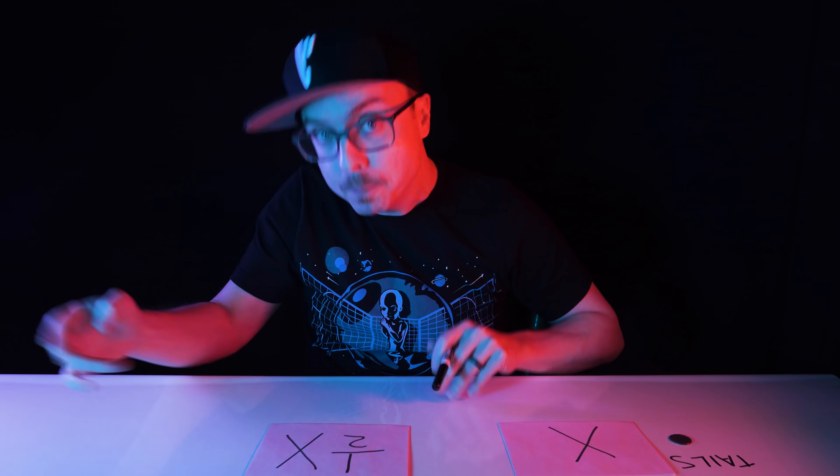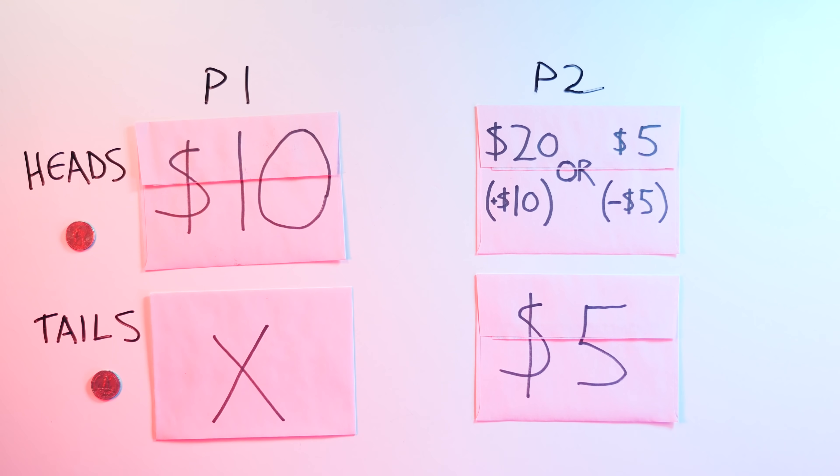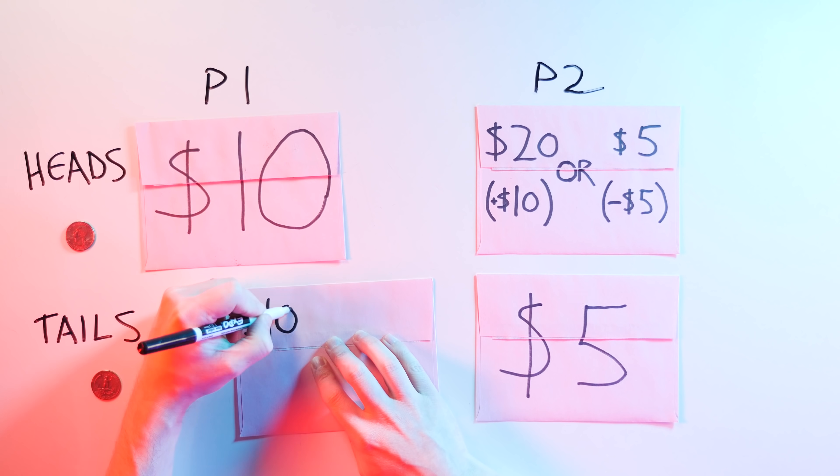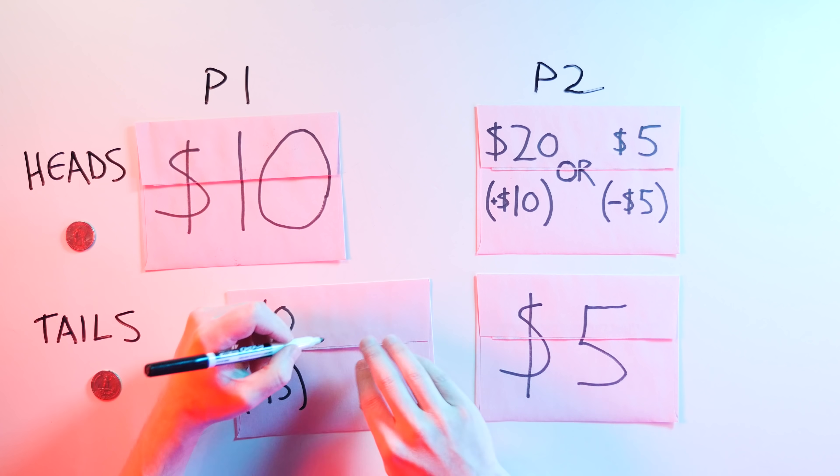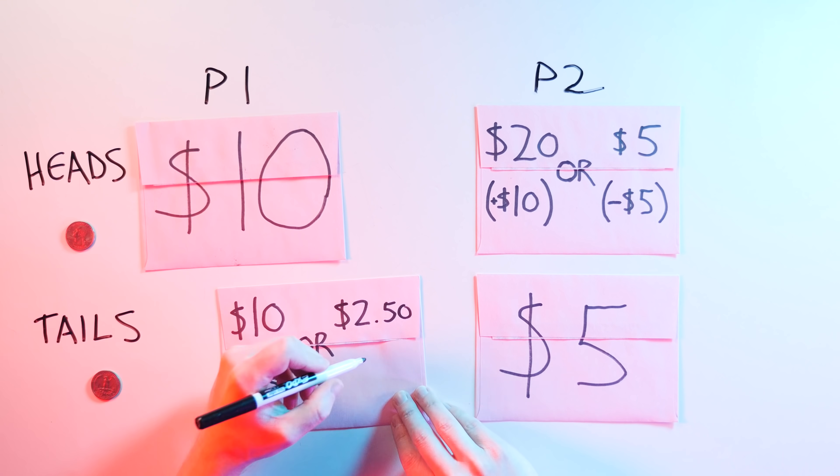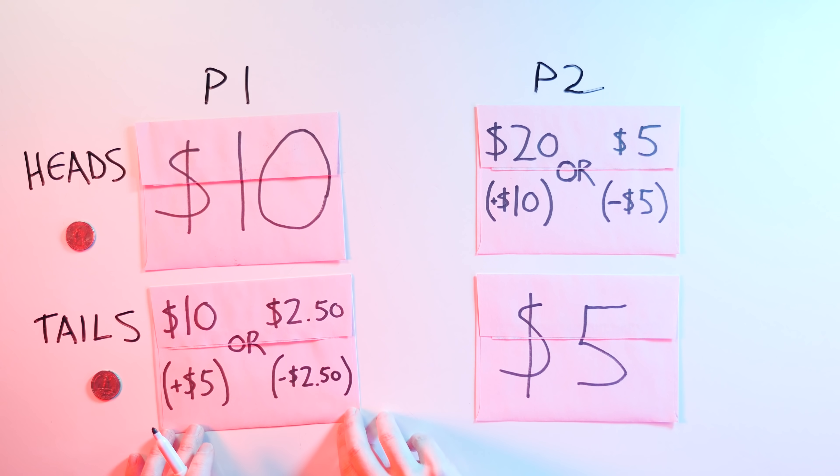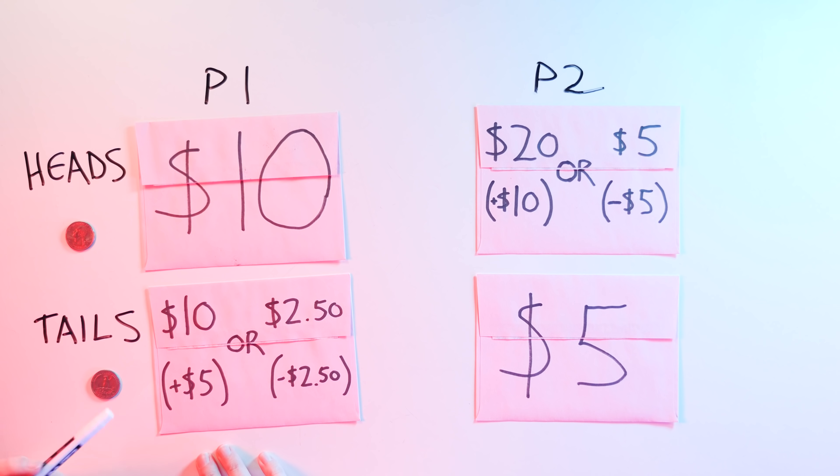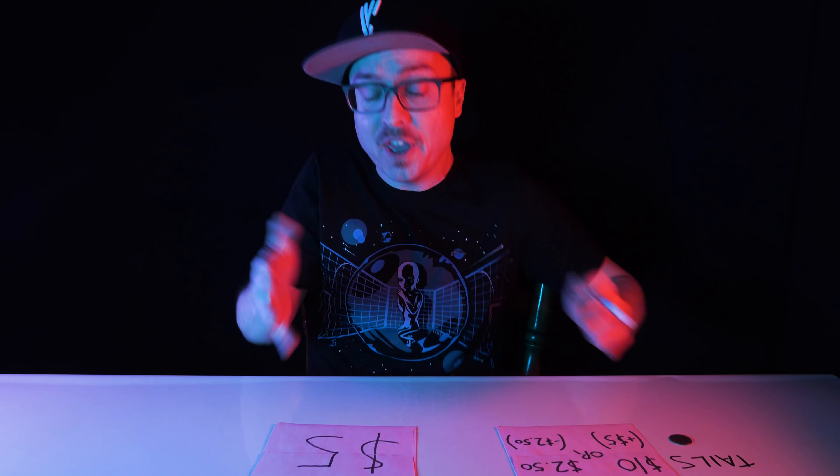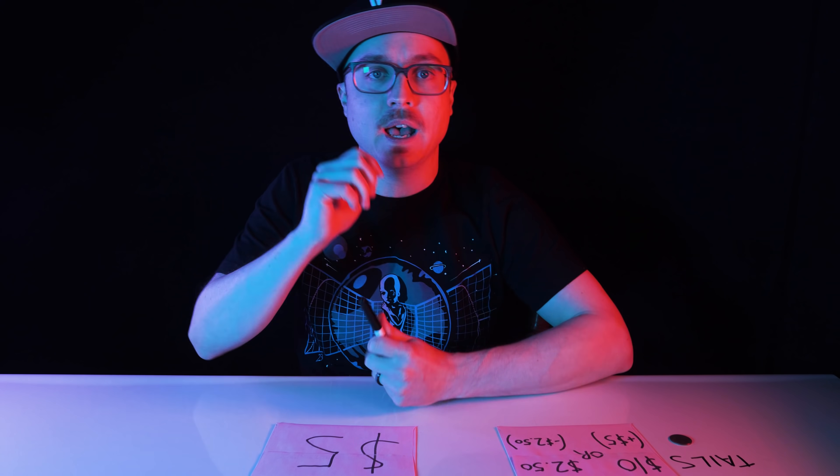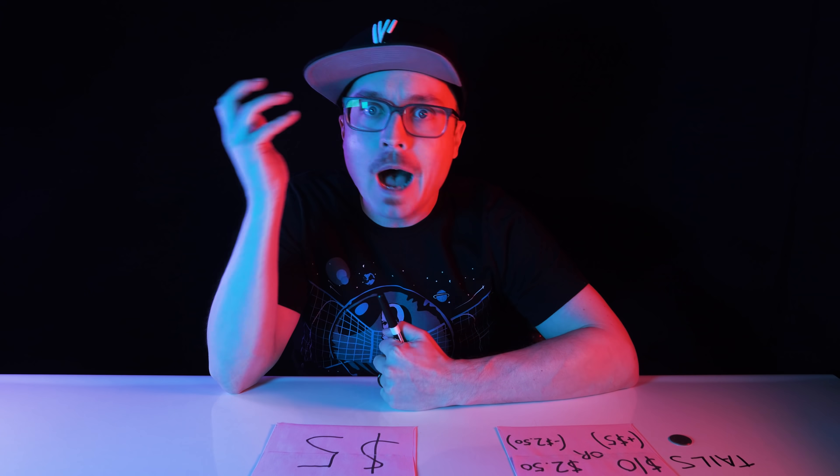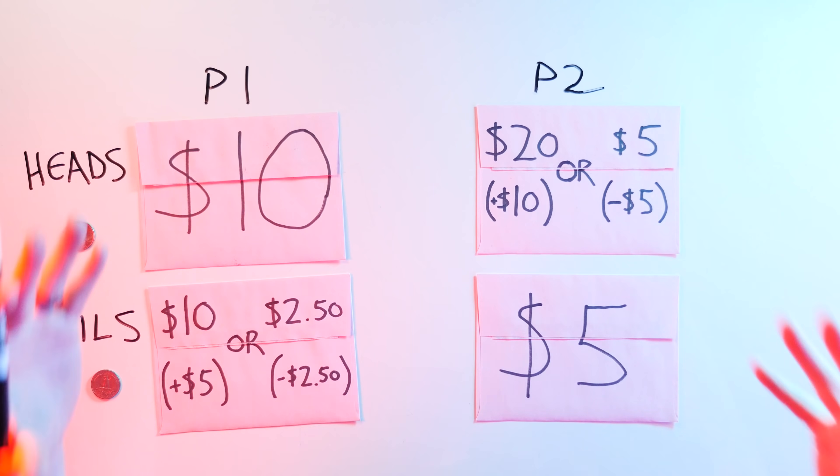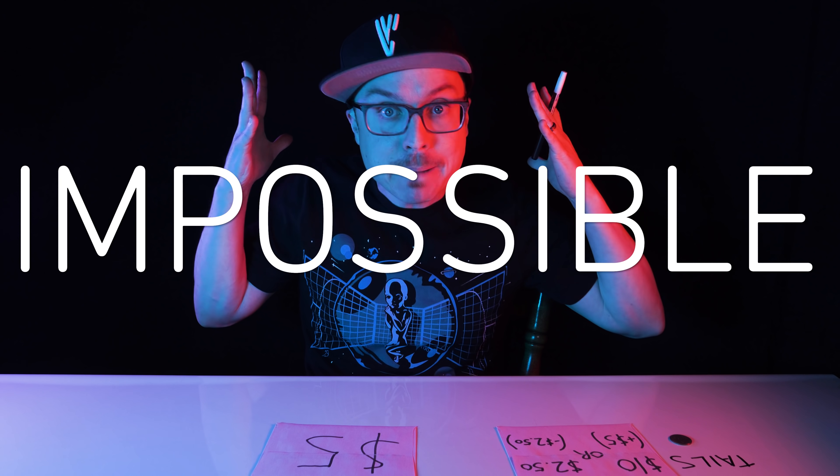Player 1 decides to switch because switching gives them a greater possible reward relative to what they might lose. Player 2, who's in another room, opens their envelope and finds 5 bucks. They think there's a 50% chance that switching to player 1's envelope will get them 10 bucks for a $5 gain or get them only $2.50 for a $2.50 loss. So, player 2 also thinks that what they stand to gain is greater than what they might lose. They are absolutely sure that their upside is better than their downside. But it's obvious that both players can't have an advantage in this game. That's impossible.